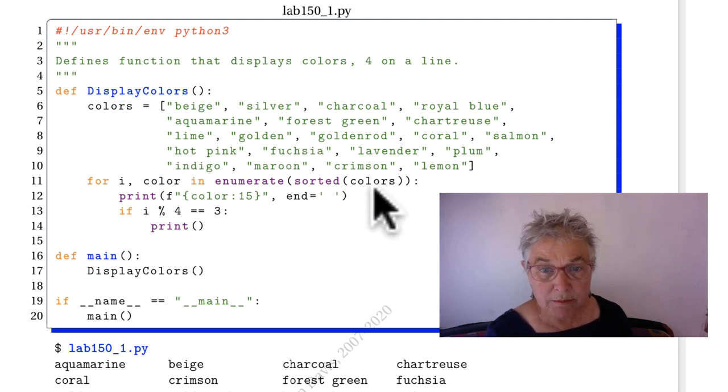We have our list of colors. I'm going to sort them because that's the spec and enumerate them. So I'm going to get the index and color for each of the colors. I will always print the color but I will not go to the new line unless this is true.